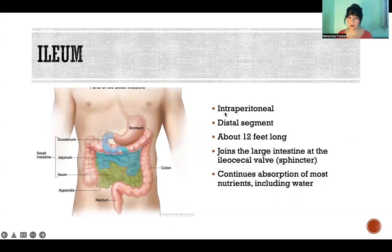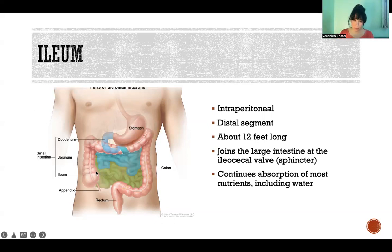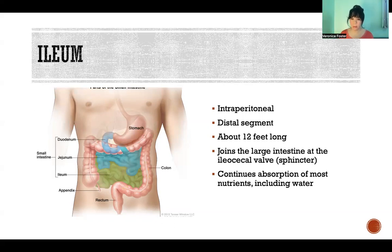Then we get to the ileum. It's also intraperitoneal. It is the most distal segment of the small intestine and also the longest segment, at about 12 feet long. It goes from the jejunum — and in our picture, this whole portion here is the jejunum, and then here is the ileum — all the way until it connects to the large intestine via the ileocecal valve. It's called the ileocecal valve, but it's actually a sphincter to be more accurate in our anatomical terminology — the ileocecal sphincter. There we also continue to absorb all those nutrients and continue to absorb water.